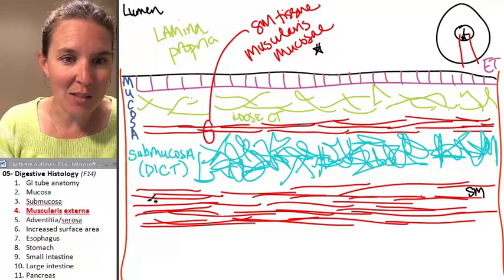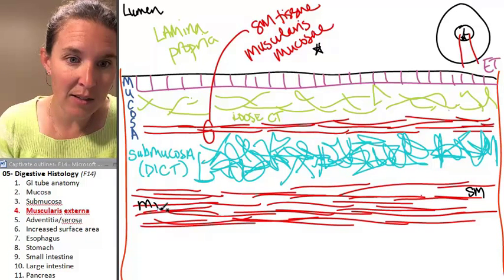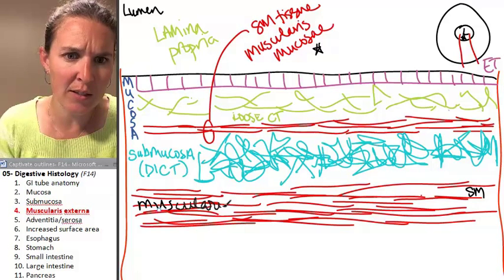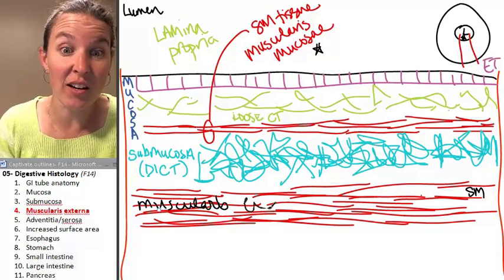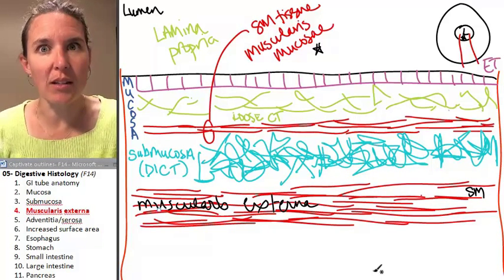It's made out of smooth muscle. Oh, I already wrote that part. Let's write muscularis externa. That says muscularis externa.